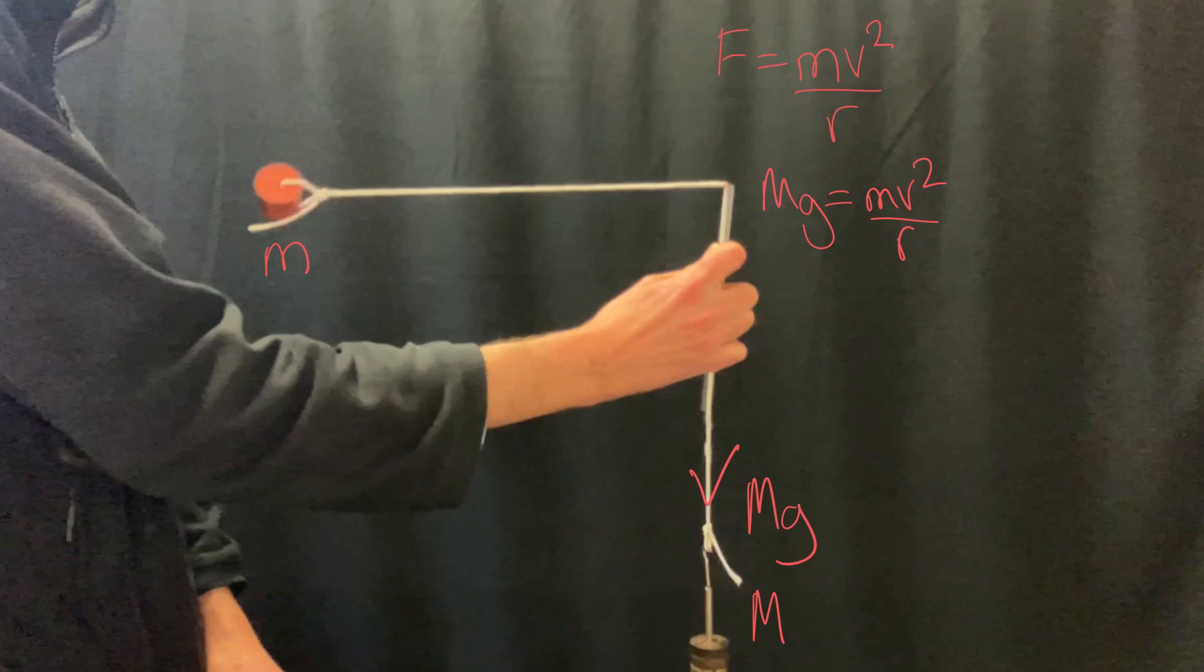Now we want to replace this expression for speed squared with an expression involving the distance that the bung travels in one complete circle and the time period. When it does one complete circle, the bung will have travelled a distance 2πr, and that will take place in a time of capital T, the time period.